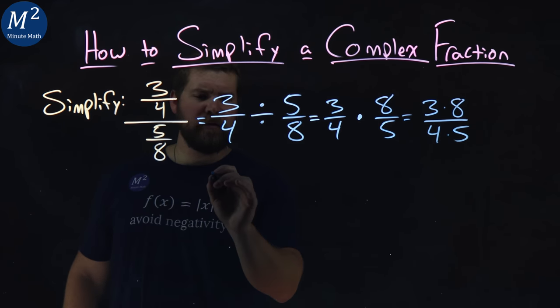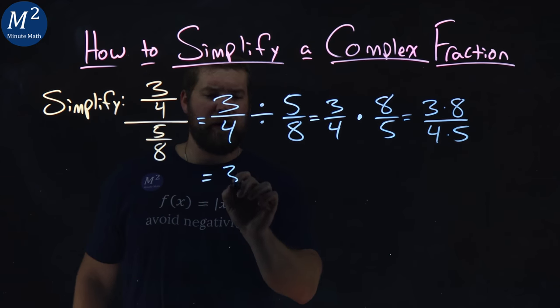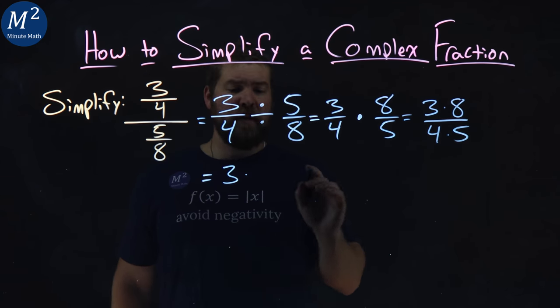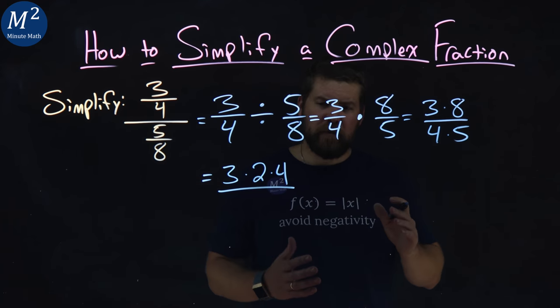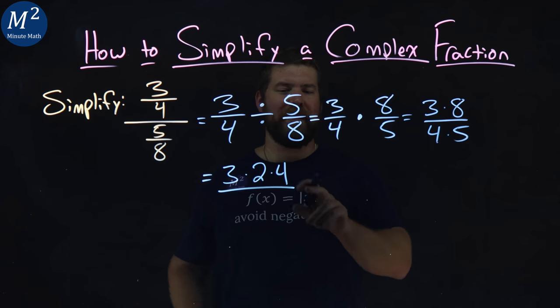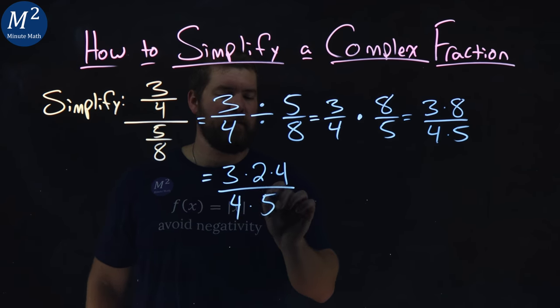Now let's break this down. Three times eight. Three doesn't break down to anything, but eight is two times four. Now the denominator we could break down if we want four to be two and two, but I already see a four in the numerator, so I'm going to leave it there, four times five.